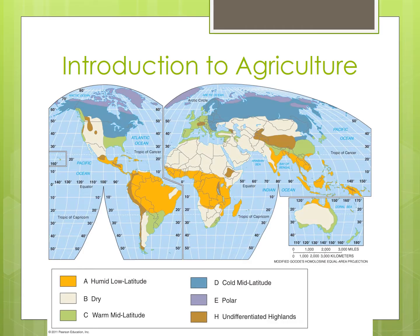If an area is sloped toward or away from the sun, along with the elevation, that can also influence temperature. As elevation increases, the growing season typically becomes shorter as temperatures decrease and precipitation falls as snow rather than as rain. Generally, mountainous areas are often unable to support agricultural activities, which is why we included them with the non-ecumene zones earlier this year.